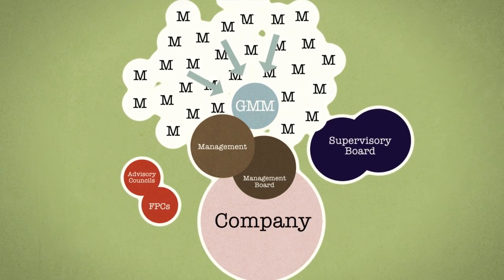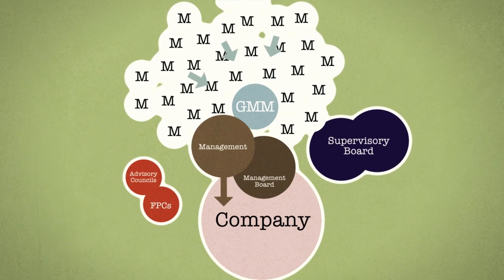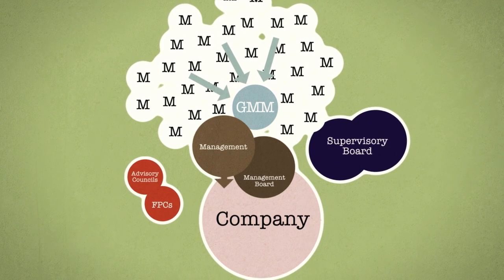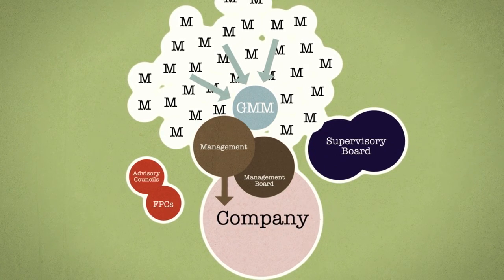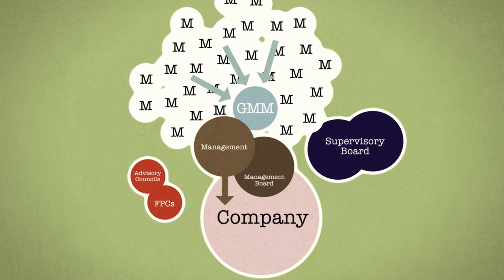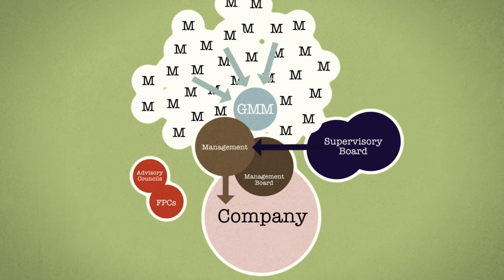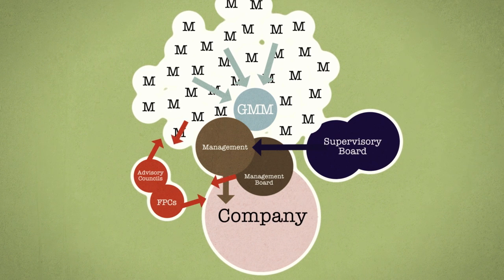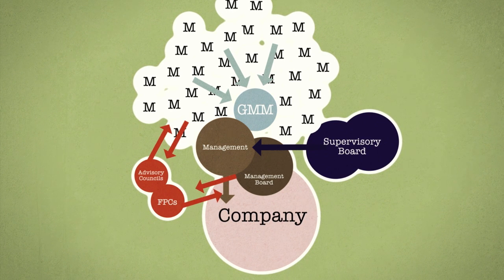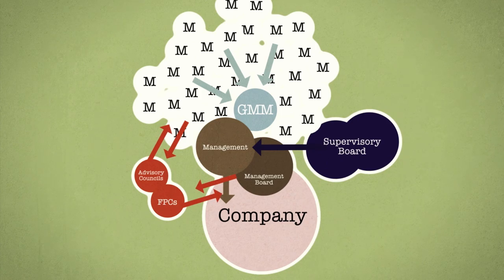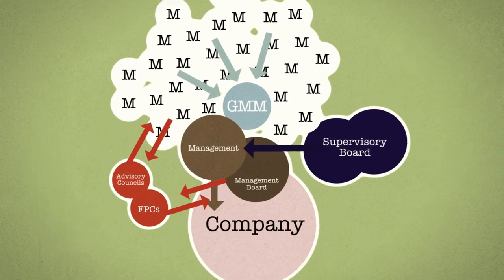The company, which is led by the cooperative board. The cooperative board, which is monitored by the supervisory board. And the advisory councils and FPCs, which inform the association and advise the management board.